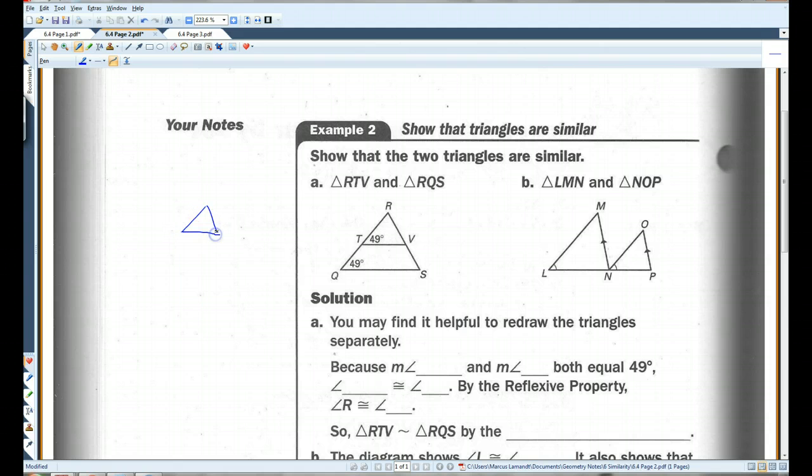So we've got RTV, this is 49 degrees, and we've got RQS. If we can show that two angles are congruent between these two triangles, we're good.